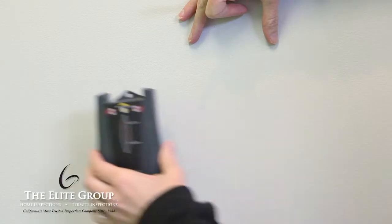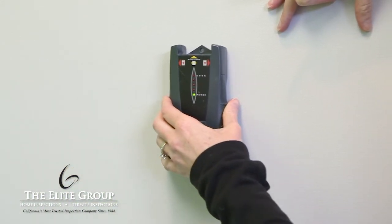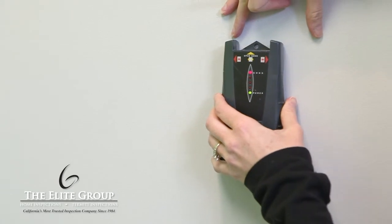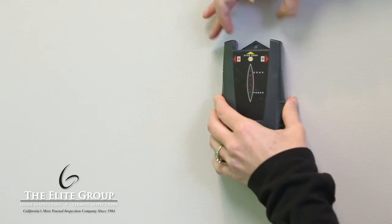When it starts to beep, that's the beginning of a stud. And when the beeping stops, you've crossed over the stud. Do this a couple of times to confirm it is consistent. Mark the center of the beeps and lights to mark the location of the stud.